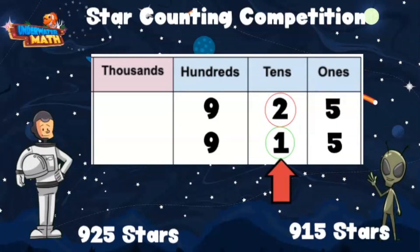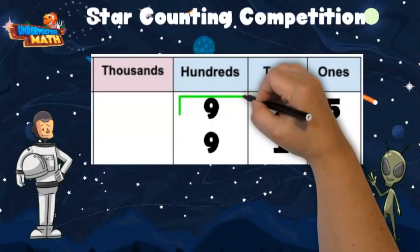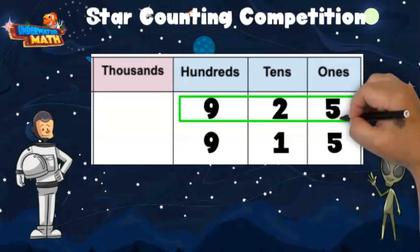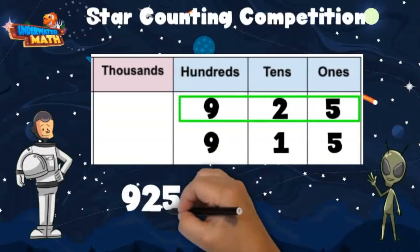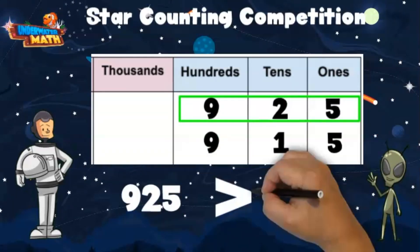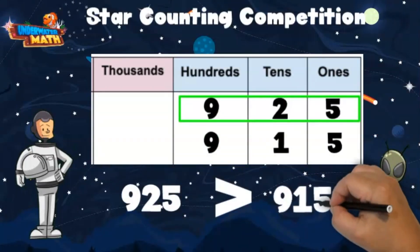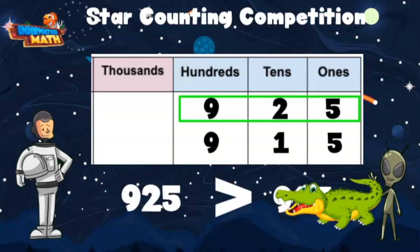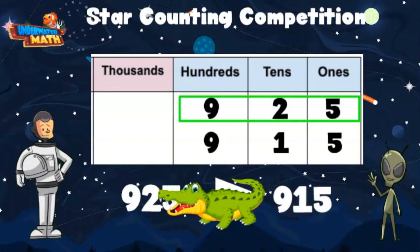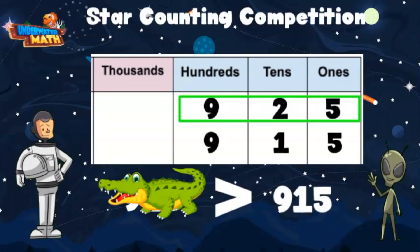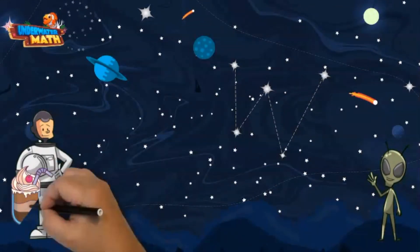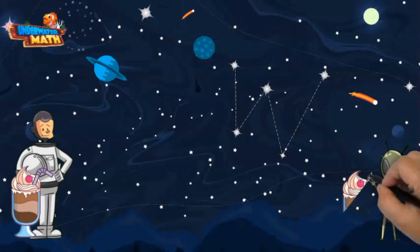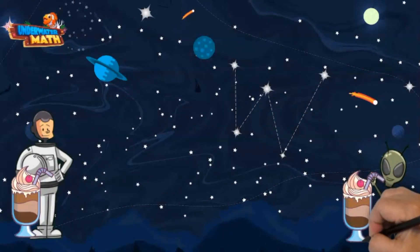This means the entire number is greater. We can show this by writing: 925 is greater than 915. Remember, the alligator wants to eat the bigger number — I win this round!